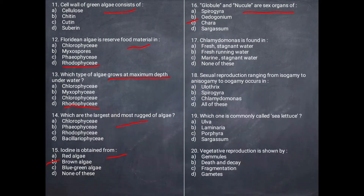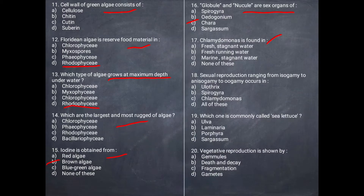Next question: Chlamydomonas is found where? It can be found in fresh water and stagnant water. The correct answer is A, fresh and stagnant water.